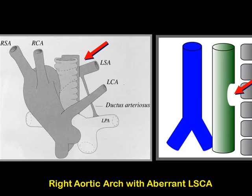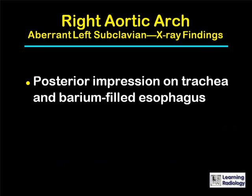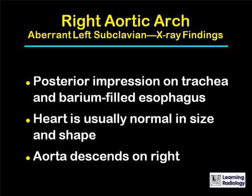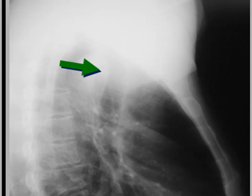This diagram demonstrates the posterior position of the aberrant left subclavian artery behind both the trachea and the esophagus. There will be a posterior impression on the trachea and the barium-filled esophagus. The heart will usually be normal in size and shape because most of these patients have no congenital heart disease. The aorta descends on the right. On the frontal view, the red arrow points to the right-sided aortic arch displacing the trachea to the left, and on the lateral view, the green arrow points to the forward displacement of the air in the trachea produced by the aberrant left subclavian artery.